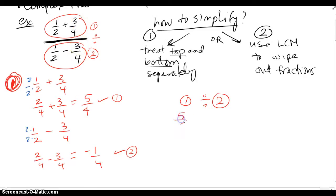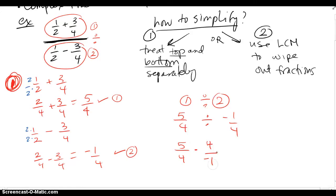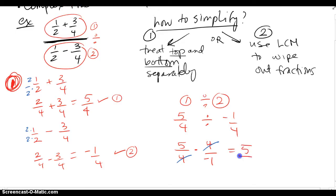So five fourths divided by negative one fourth — that's just two fractions, so we multiply by the reciprocal. There's going to be some reducing: our final answer is five over negative one, which is just negative five. Our overall complex fraction reduced to negative five.